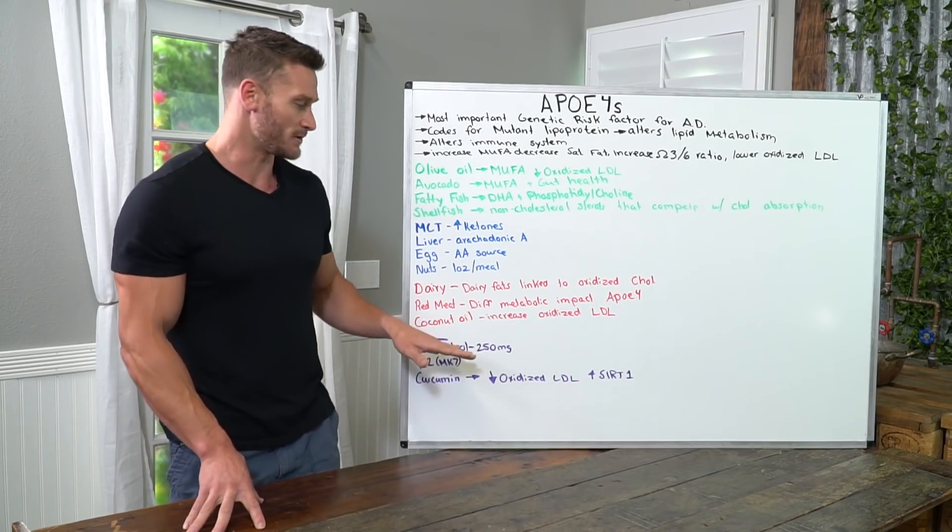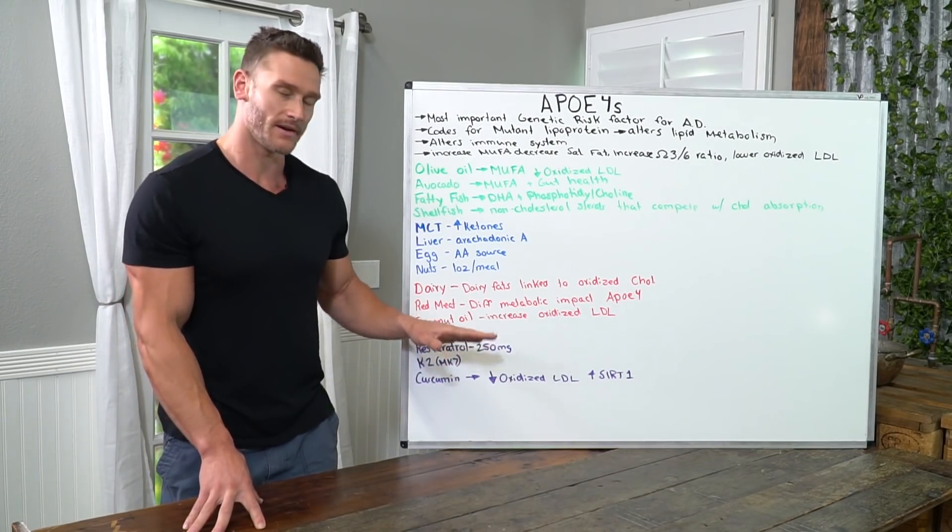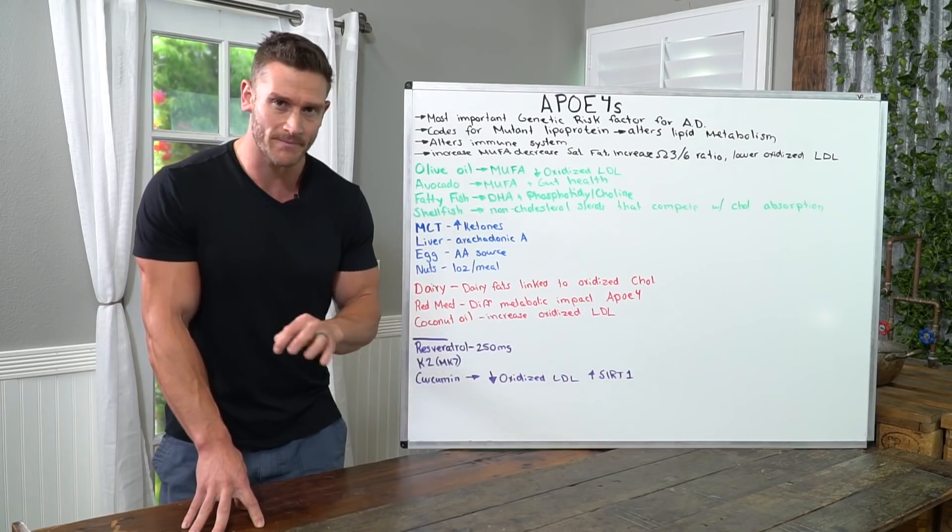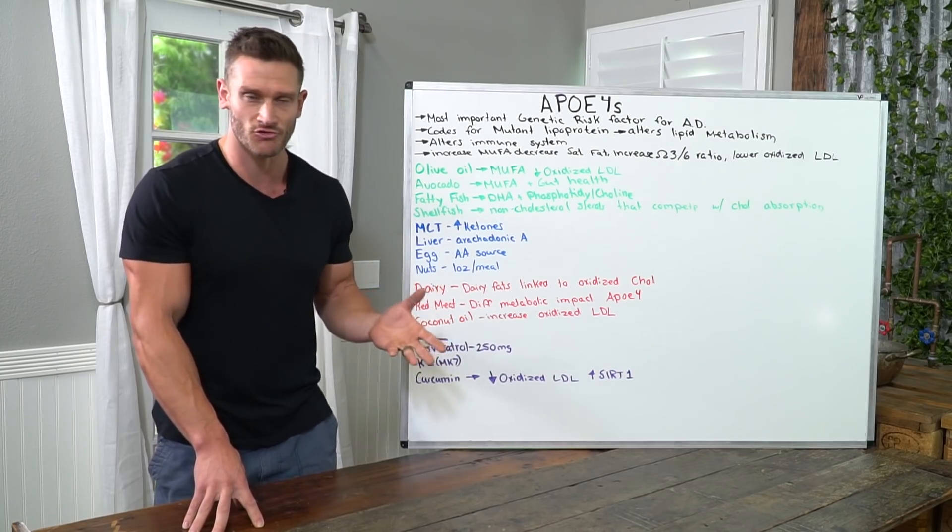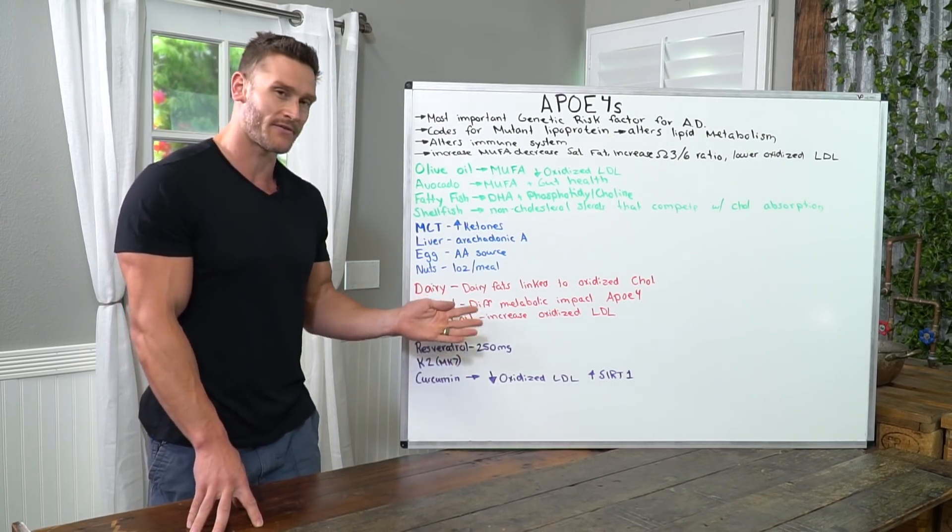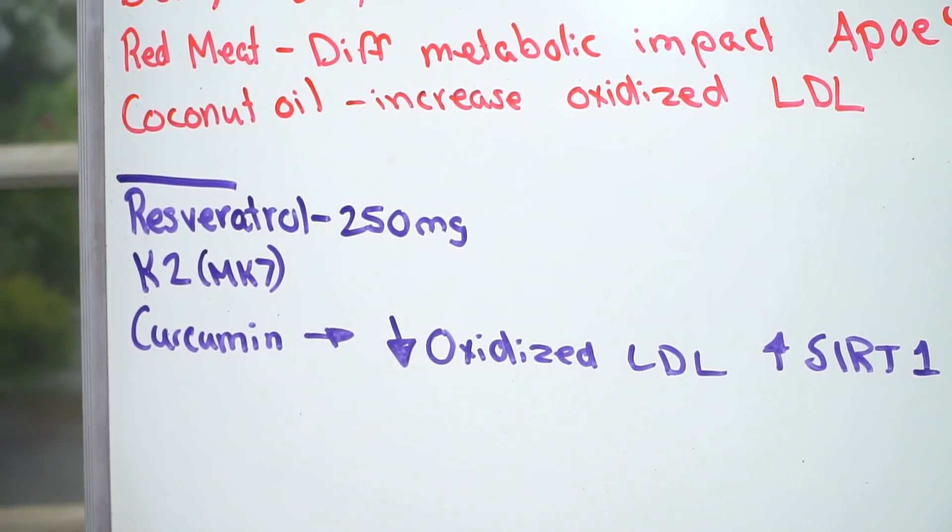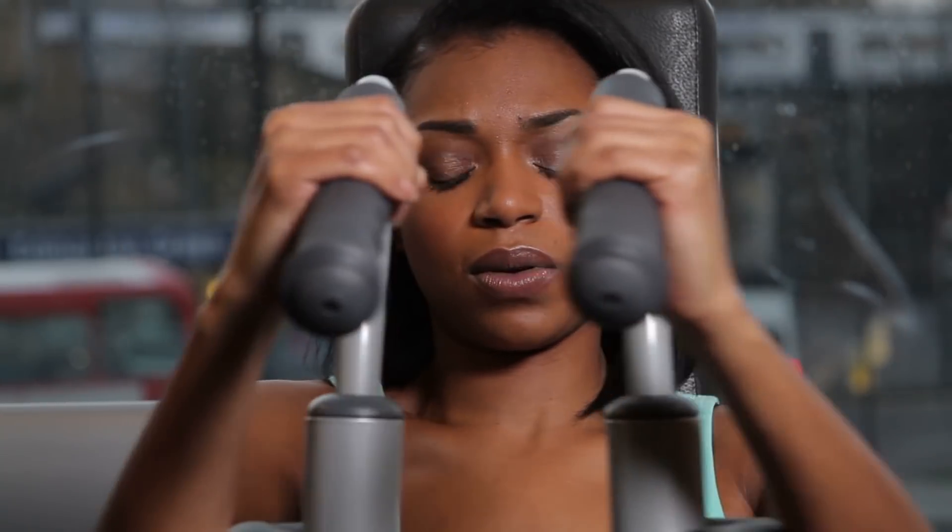Now let's talk some supplements for a minute that'll help you out with this. Resveratrol. Well, we could break it down. There's a lot of better ways to skin a cat than just resveratrol, but for all intents and simple purposes and for being cost effective, 250 milligrams of resveratrol can help reduce oxidized LDL in APOE4 individuals.